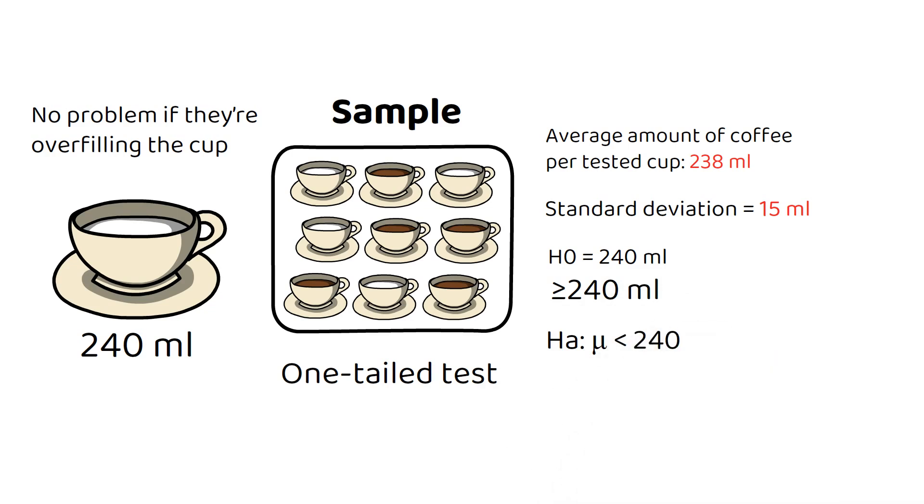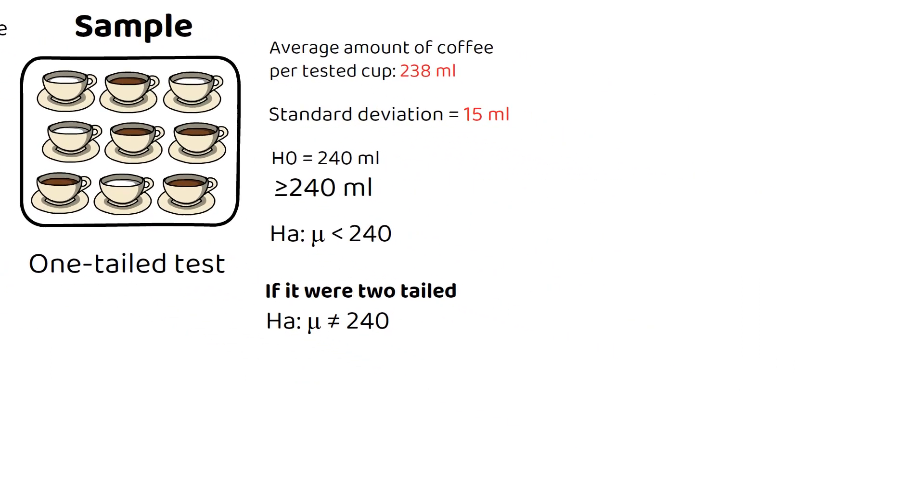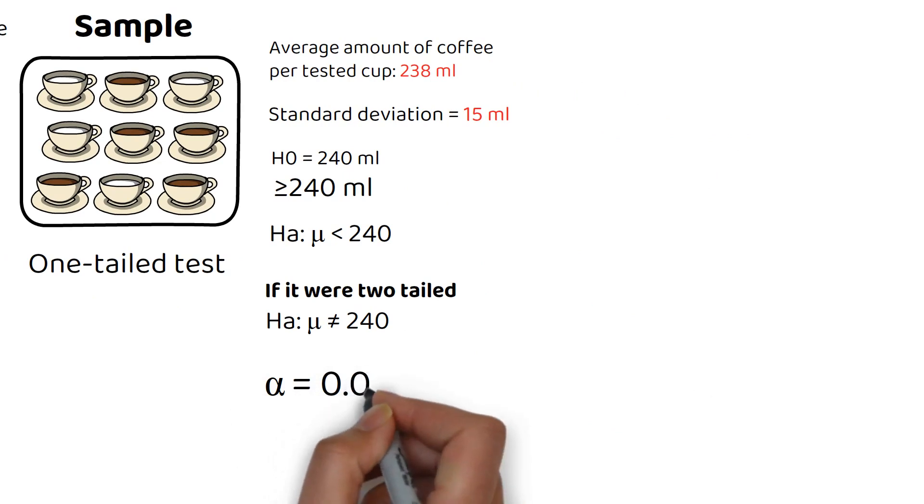Note that since it's one-tailed, the alternative hypothesis has a less than sign. If it were two-tailed, the alternative hypothesis would typically have a not equal to sign, since it wouldn't matter which direction the hypothesis was off. The next step is to choose a significance level, the alpha. Let's choose a common significance level of 0.05, which means you're looking for 95% certainty. This is the probability of rejecting the null hypothesis when it's actually true.